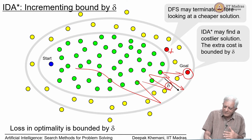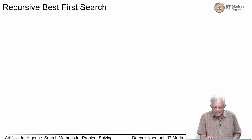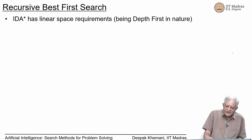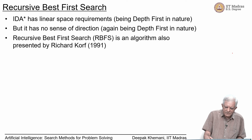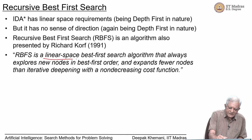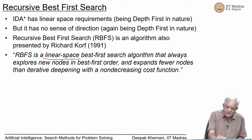That delta-extension was an algorithm given by Richard Korf. He also gave us another algorithm called Recursive Best First Search (RBFS). IDA* has linear space requirements, being depth-first in nature, but has no sense of direction. RBFS, given by Korf in 1991, is a linear-space, best-first algorithm — it also has a sense of direction. It is a bit like hill climbing with backtracking; it explores nodes in best-first order and expands fewer nodes than IDA*.